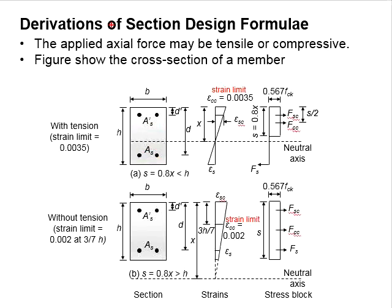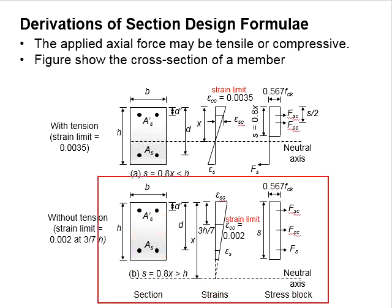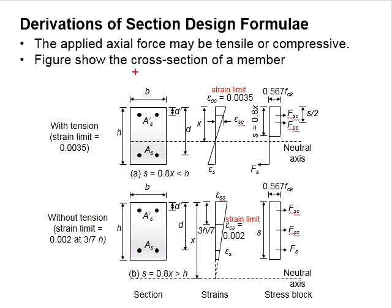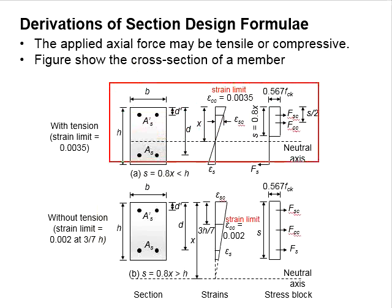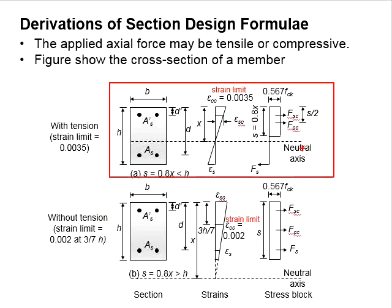Under the axial force, there are two possibilities. The column can be in full compression, or there could be combinations of compression and tension stresses in the cross-sections.